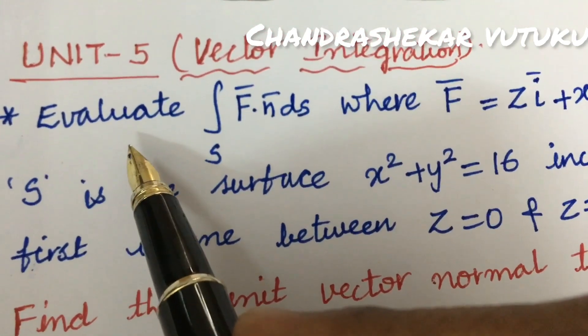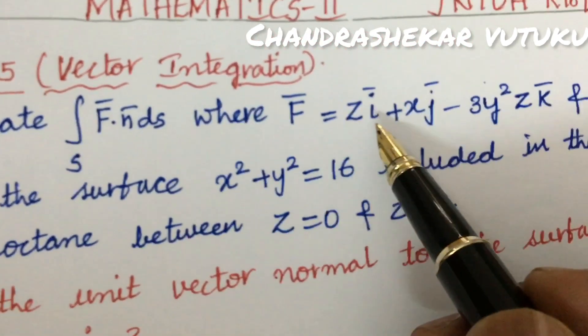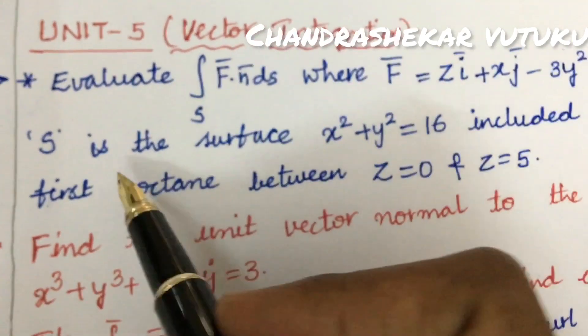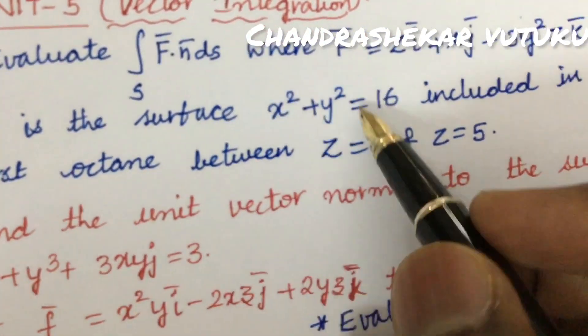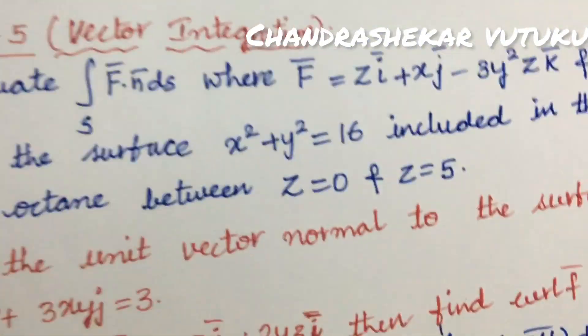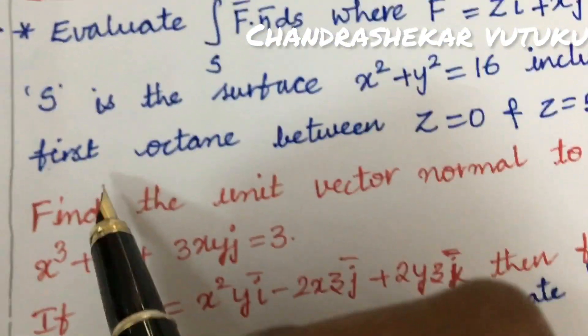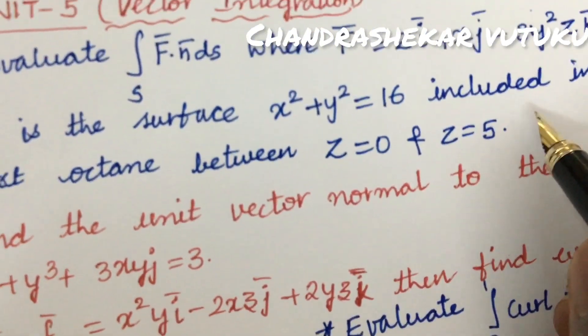The first important question is: evaluate the integral of s·f·ds where f equals zi + xj - 3y²k, and s is the surface x² + y² = 16 included in the first octant between z = 0 and z = 5. Such questions were asked several times in previous examination papers.